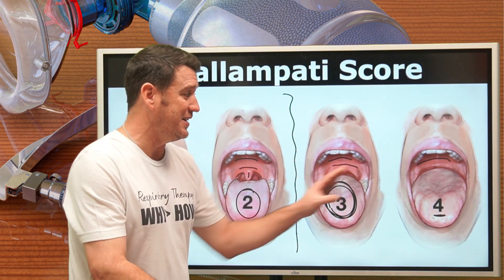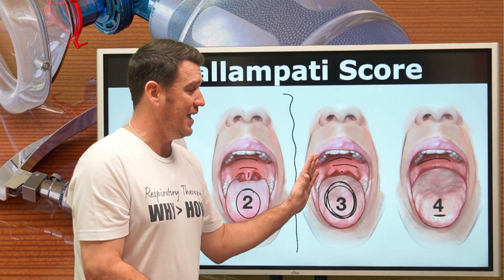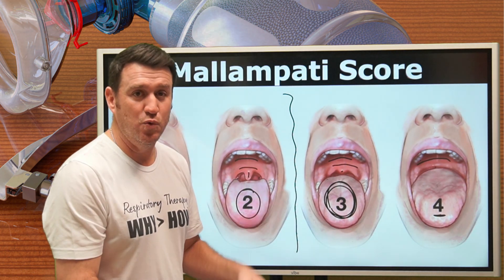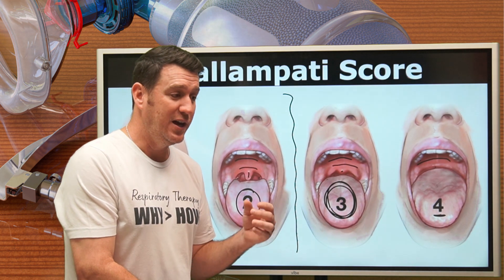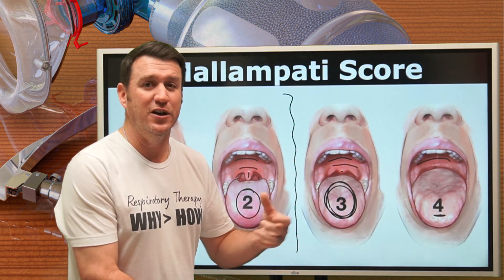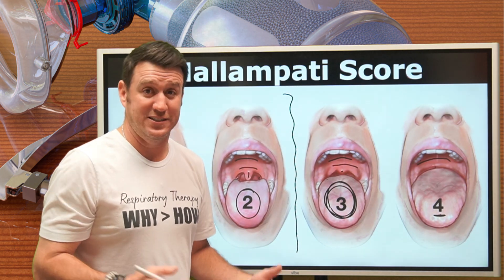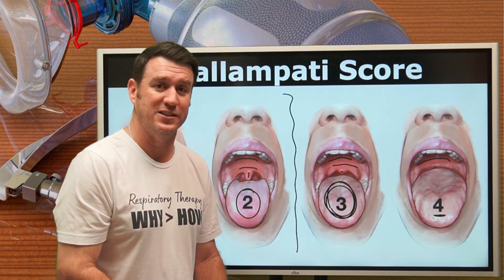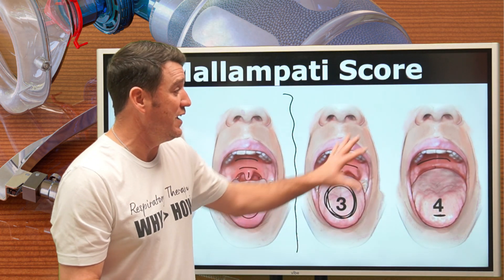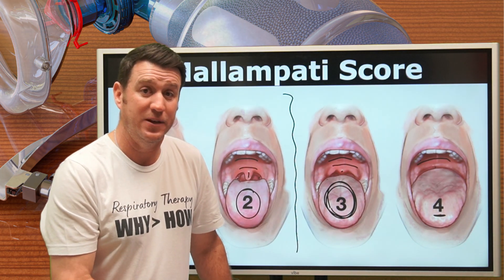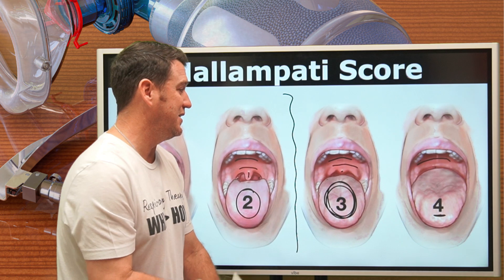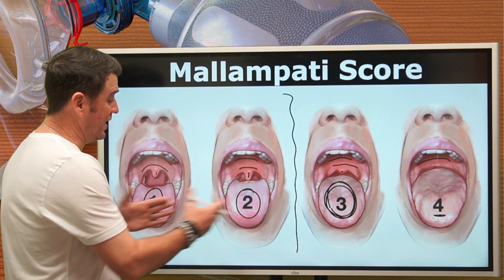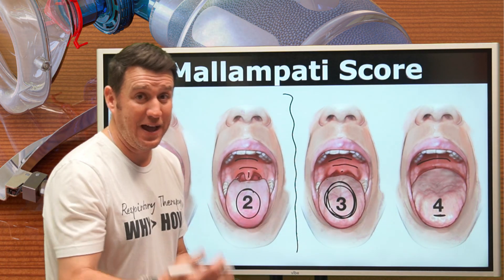When you start getting indications of a higher Mallampati score and signs of a difficult airway, you want to start asking yourself: should we consider video-assisted laryngoscopy? A lot of evidence says that's the preferred method anyway. In these three and four categories, we're going to be going with video-assisted laryngoscopy, or maybe even flexible bronchoscopy-assisted intubation. That's the Mallampati score.